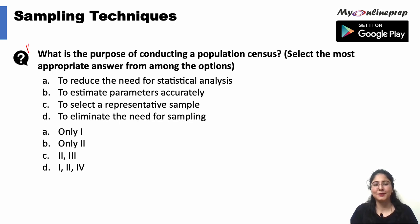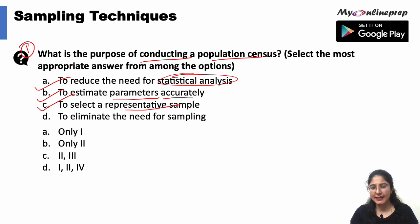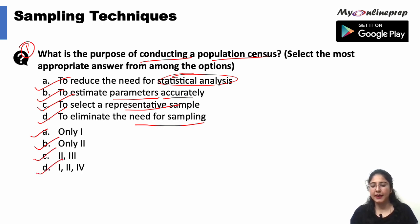The first question is: what is the purpose of conducting a population census? The first option says to reduce the need for statistical analysis, the second is to estimate parameters accurately, the third states to select a representative sample, and the fourth is to eliminate the need for sampling. The options are: only one, only two, two and three, or both first, second and fourth. The correct option would be option B.